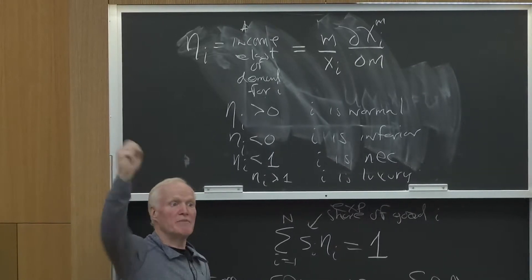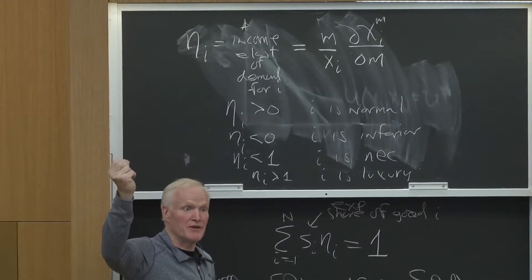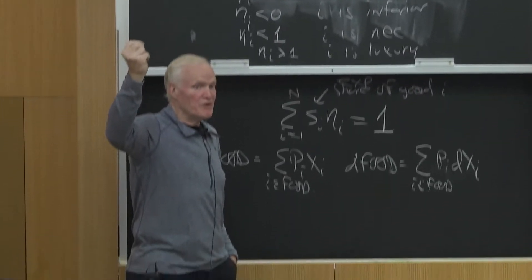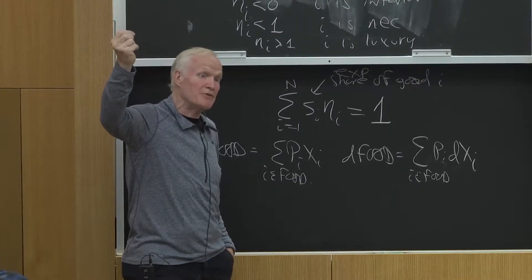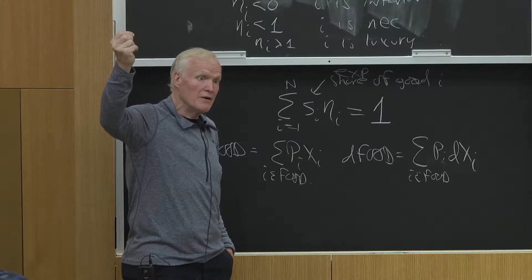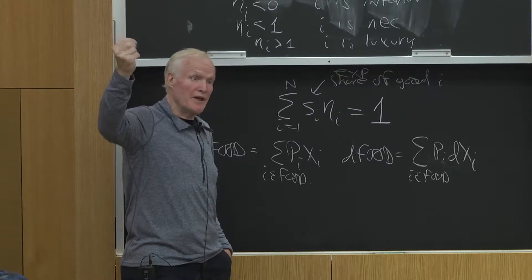So when your income goes up 10%, consumption only goes up 3%. So if your consumption is only going up 3% and income is going up 10%, what's going to happen to your share? The share of income spent on that good is going to go down.